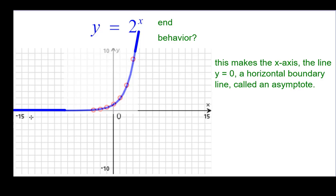This makes the x-axis, the line y equals 0, a horizontal boundary line, which we call an asymptote. And it would look like this, the line y equals 0. Usually we draw it dotted or dashed, which means the curve gets really close to it without touching it.